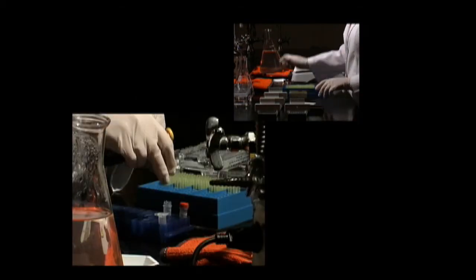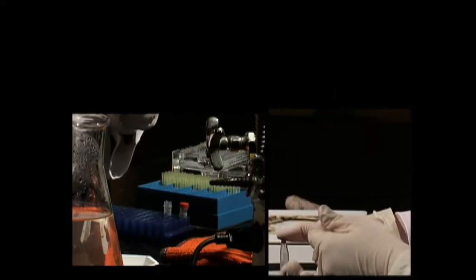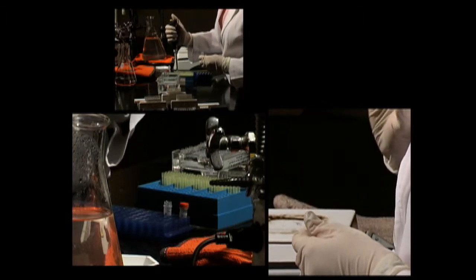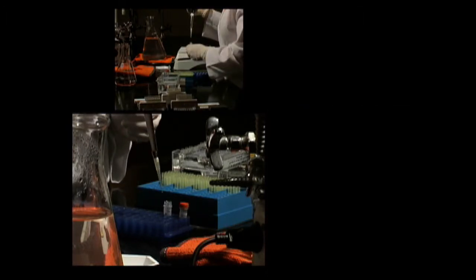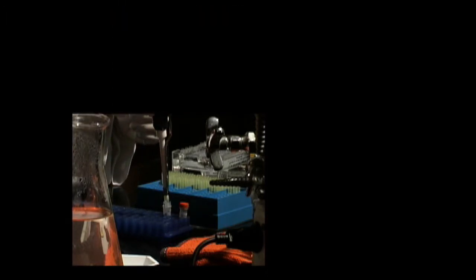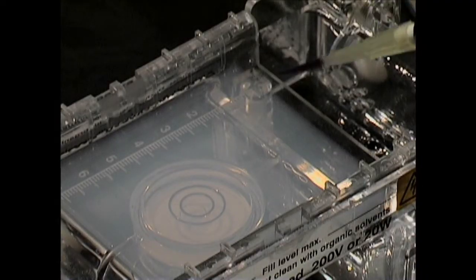Before loading the sample, it should be heated to 65 degrees to break down unwanted aggregates. To prepare the sample for placement in the gel, mix it with 5 microliters of gel loading solution. Then load it into a sample well, taking care not to tear the gel.